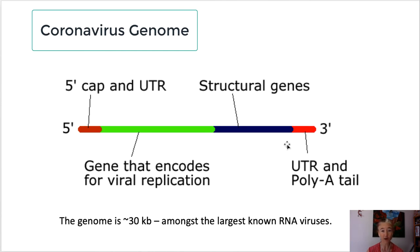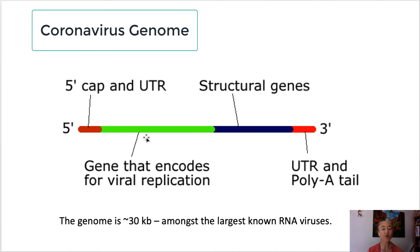The poly-A tail is also part of what fools our body, because our body looks at this and says, 'Hey, that looks like a typical mRNA — let's go ahead and express the genes on that.' The genome is made up of two major components. The non-structural proteins, shown in bright green, encode for things that allow the virus to make more copies of its genome. There's an enzyme that can make a 3-prime to 5-prime complementary strand, briefly making double-stranded RNA, and then make more copies of the 5-prime to 3-prime RNA. That's how the virus makes more copies of its genome.